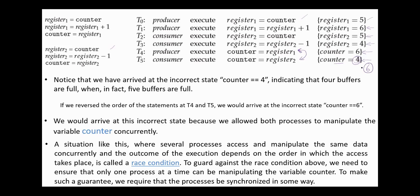We arrived at this incorrect result because we allowed both processes to manipulate the variable counter concurrently. A situation like this where several processes access and manipulate the same data concurrently and the outcome of the execution depends on the order in which the access takes place is called a race condition. To guard against the race condition, we need to ensure that only one process at a time can be manipulating the variable counter. To make such a guarantee, we require that the processes be synchronized in some way, and this is what we are going to discuss in this chapter.